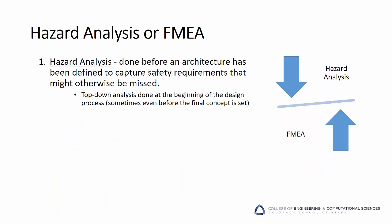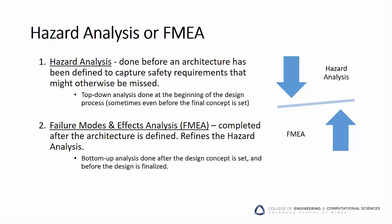Hazard analysis and failure modes and effects analysis are similar, complementary tools. Hazard analysis is typically done early in a project before the detailed design is complete, to capture safety concerns that might otherwise be missed. It's a top-down analysis looking at the big picture — the system level. In contrast, failure modes and effects analysis is best completed after a design has been developed a little more. It refines the hazard analysis by looking at safety from a bottom-up perspective of components or subsystems that could fail. Both are valuable, but we're going to focus on hazard analysis.